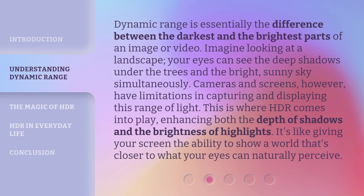Dynamic Range is essentially the difference between the darkest and the brightest parts of an image or video. Imagine looking at a landscape — your eyes can see the deep shadows under the trees and the bright, sunny sky simultaneously. Cameras and screens, however, have limitations in capturing and displaying this range of light. This is where HDR comes into play, enhancing both the depth of shadows and the brightness of highlights. It's like giving your screen the ability to show a world that's closer to what your eyes can naturally perceive.